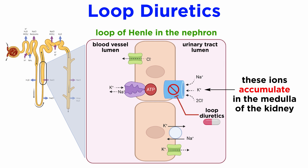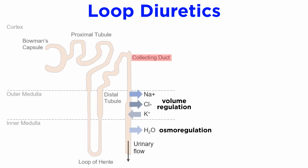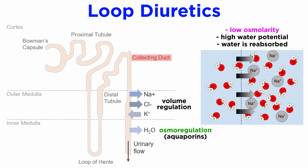Because the ascending loop is practically impermeable to water, this leads to a substantial concentration of these ions in the medulla of the kidney. This ion accumulation in the medulla is critical for water reabsorption when the tubular fluid reaches the collecting duct later on in the nephron. The collecting duct of the nephron is highly permeable to water due to the insertion of aquaporins, which are water transporting channels, in the cells lining the duct. Because of the action of the NAKCl transporter, the resulting fluid in the collecting duct has a low osmolarity and very high water potential, and is reabsorbed down its water potential gradient by osmosis.